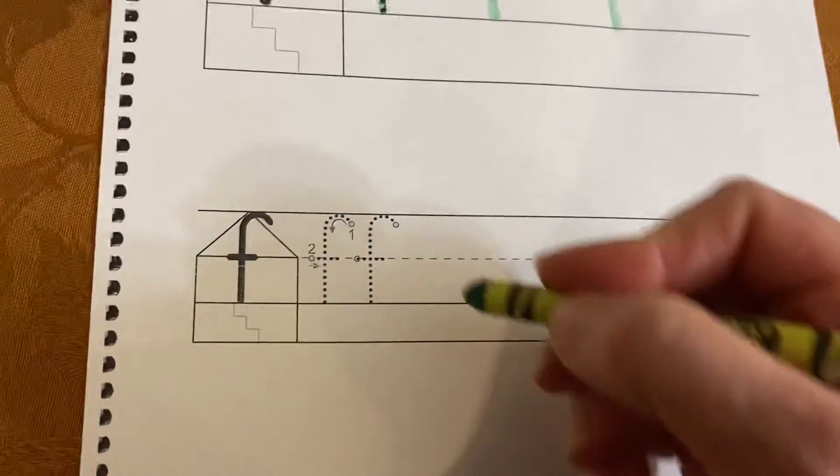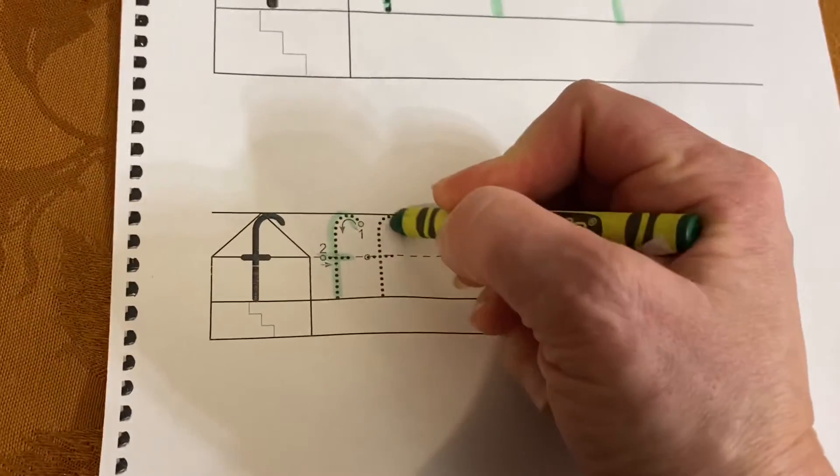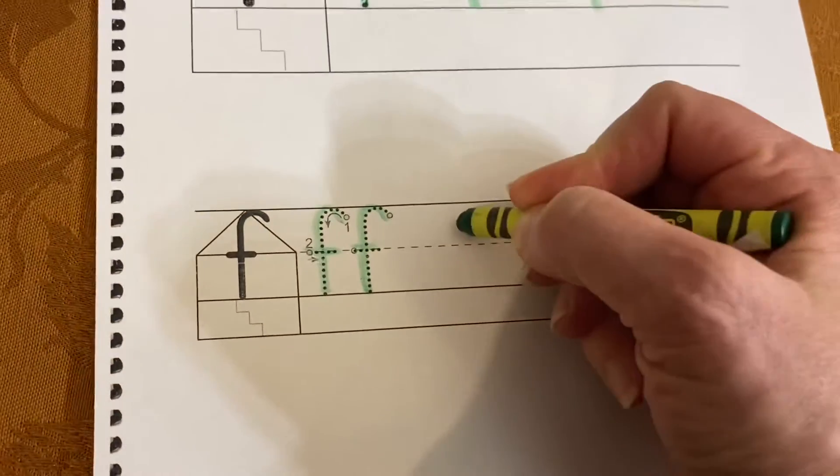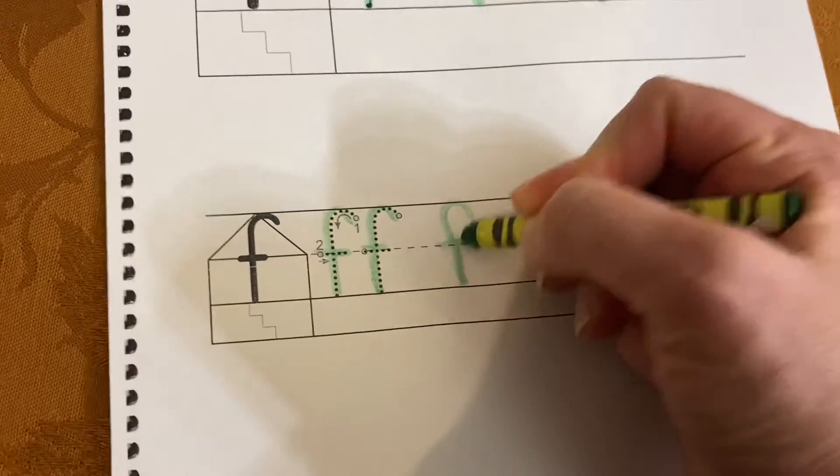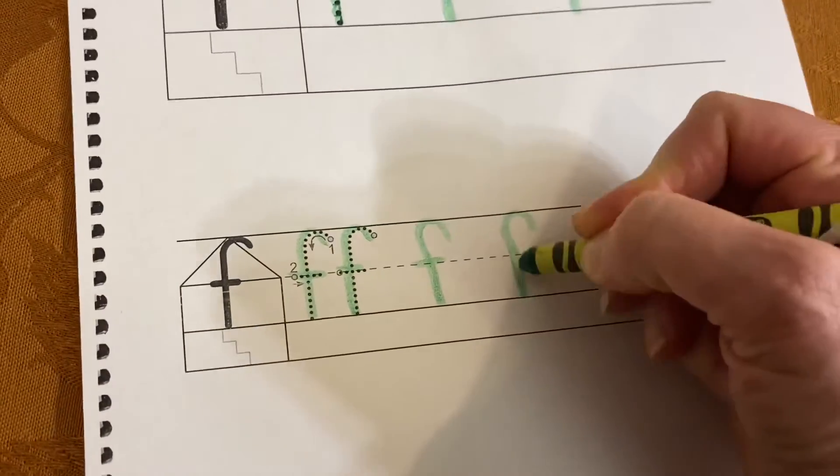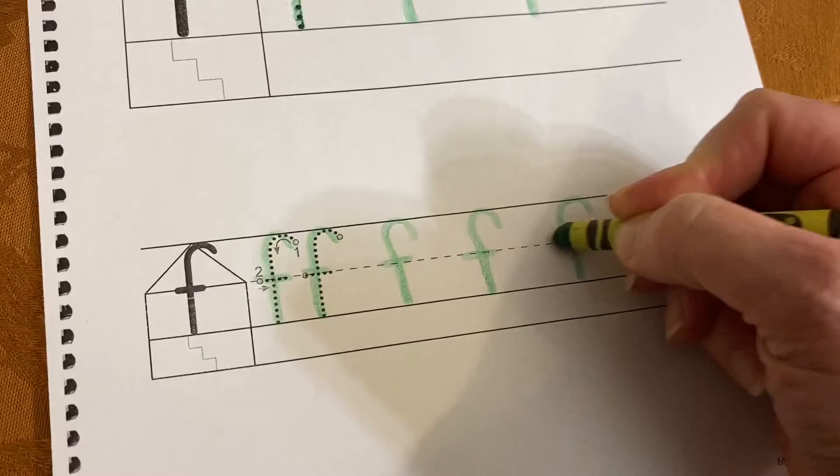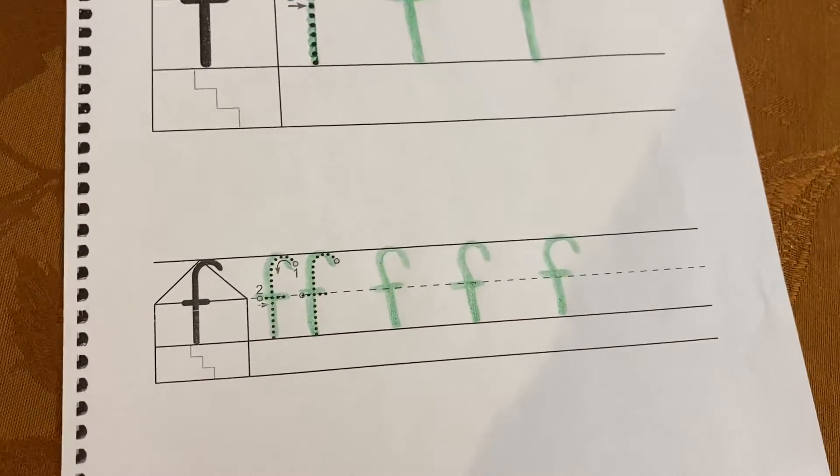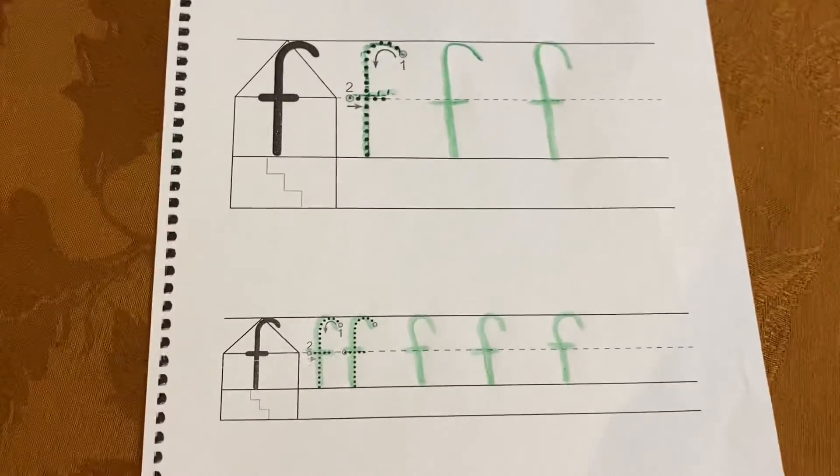And now down at the bottom you can trace and trace, and then maybe do one, one, two, three. Just very carefully and slowly so you do them neatly.